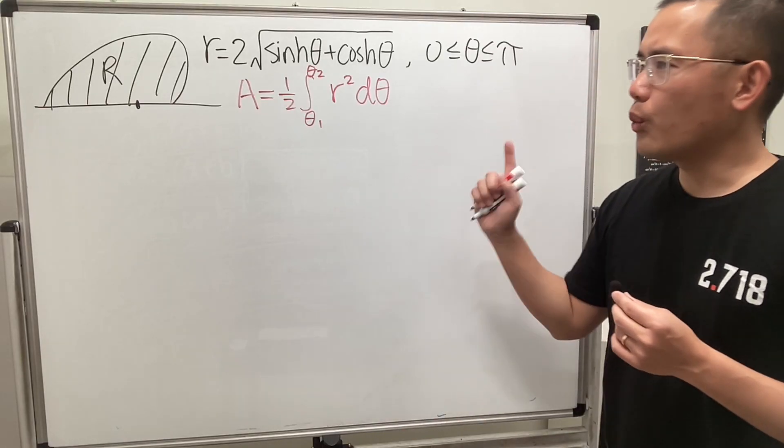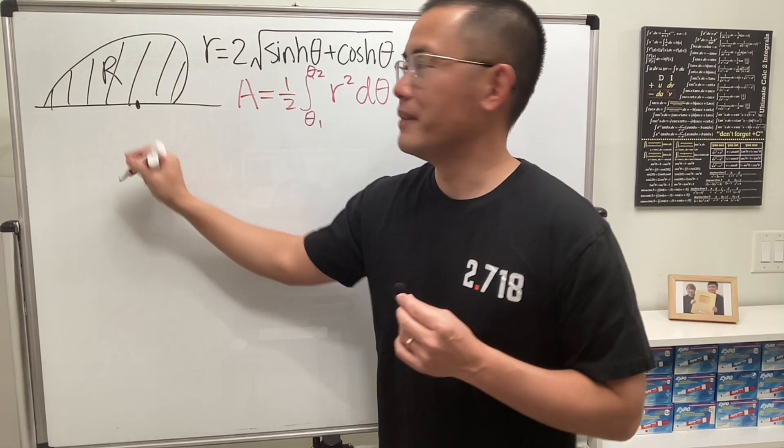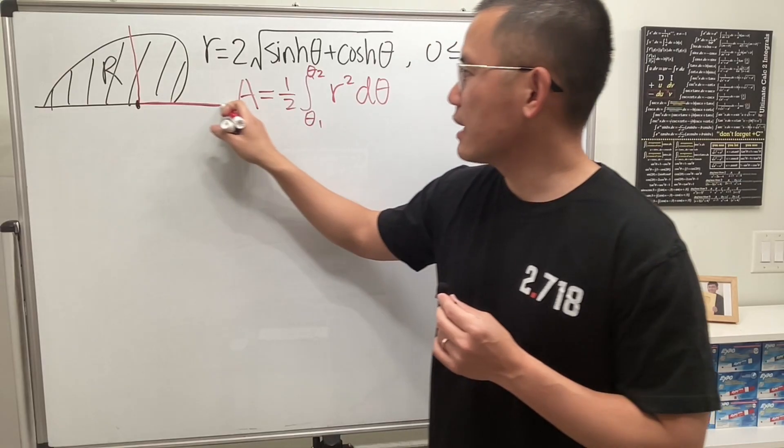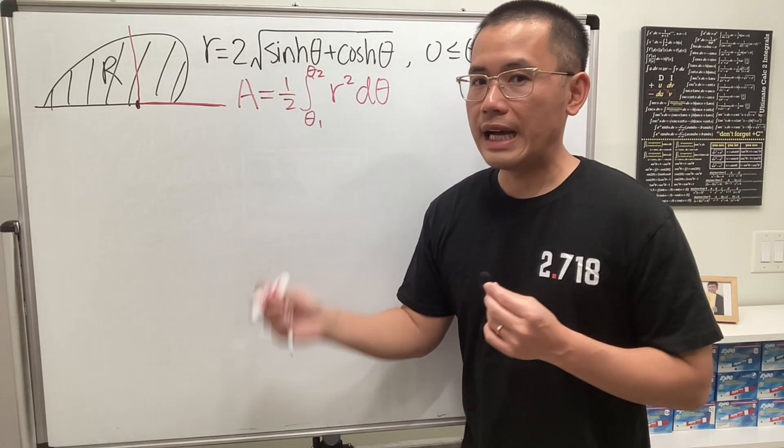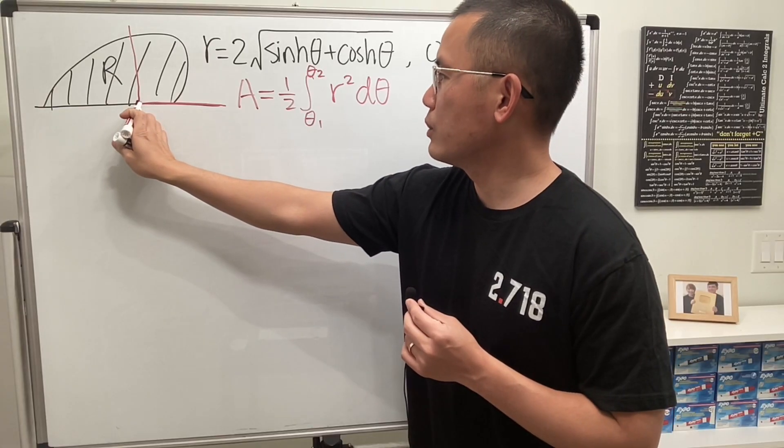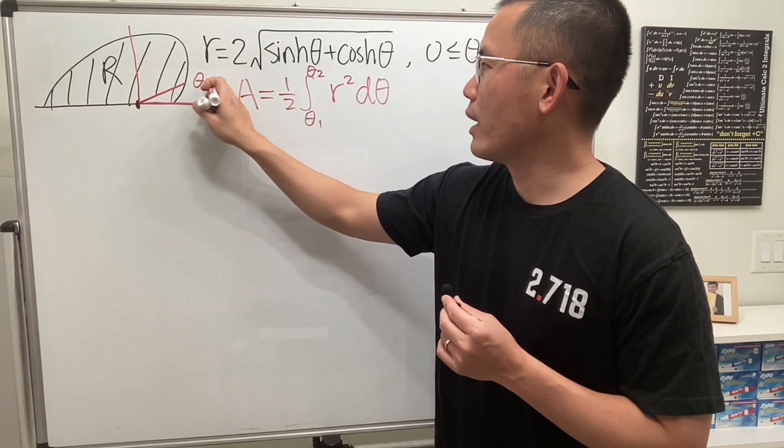And the reason why this works is because if you look at this, and here is the origin actually. I'm just going to put down the y-axis and then the x-axis. How it works is that, let's say we have theta 1, which is an angle like this. If you're going to shoot out a ray like this, this is like theta 1, all right?